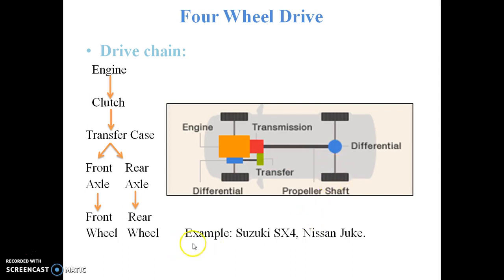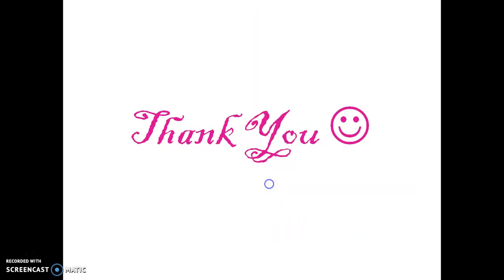Examples of this type are the Suzuki SX4 and the Nissan Juke. I hope you understood the automobile layout based on IC engine and drive axle position. Thanks for watching this video.